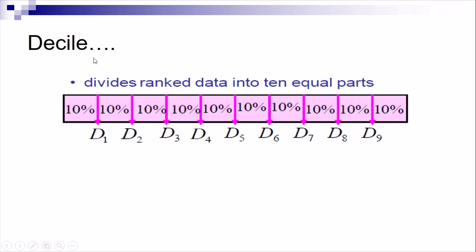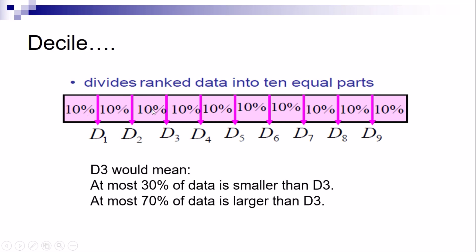Next is the decile. The decile divides ranked data into 10 equal parts — compared to quartiles which have 4 parts, deciles have 10, with each part having 10 percent. For example, D3 (the third decile) means 30% of the data is smaller than D3 while the other 70% is larger. For D6, it means 60% is smaller than the value of D6 and the other 40% is larger.